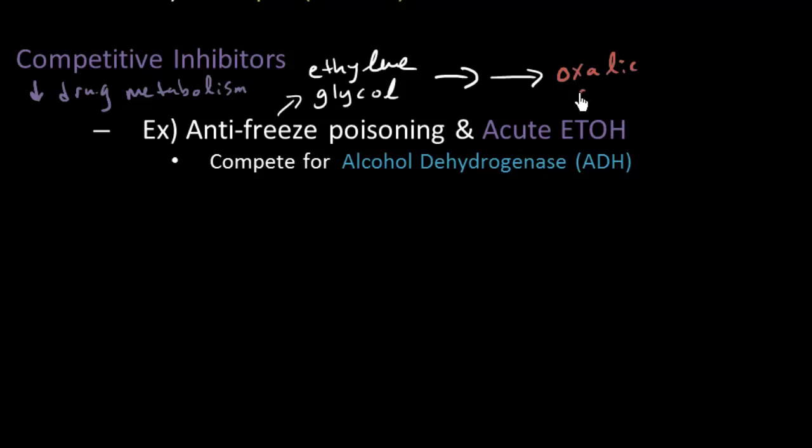Oxalic acid is problematic because it causes renal problems. And patients typically get, when they overdose without any sort of treatment, acute renal failure. That's what oxalic acid can lead to.